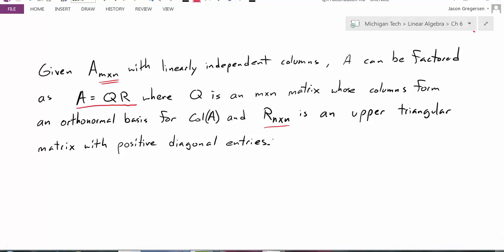It's an upper triangular matrix with positive diagonal entries. We have Q with orthonormal columns, and we have R as a square matrix that's upper triangular with positive diagonal entries.